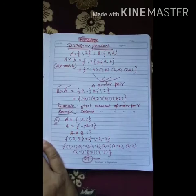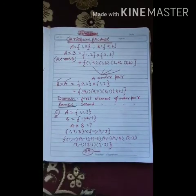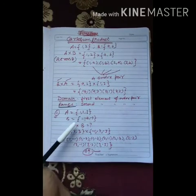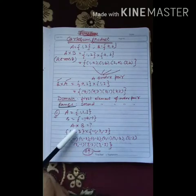Now, again let us take another example. Set A is {1, 2, 3}. Set B is {-1, -2, -3}. Find A x B.